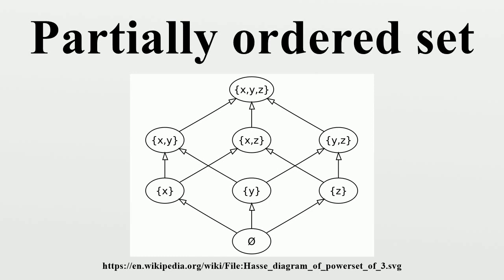Extrema: There are several notions of greatest and least element in a poset P. Notably, greatest element and least element: An element G in P is a greatest element if for every element A in P, A ≤ G. An element M in P is a least element if for every element A in P, M ≤ A. A poset can only have one greatest or least element.